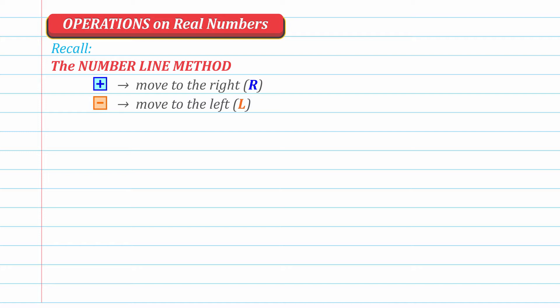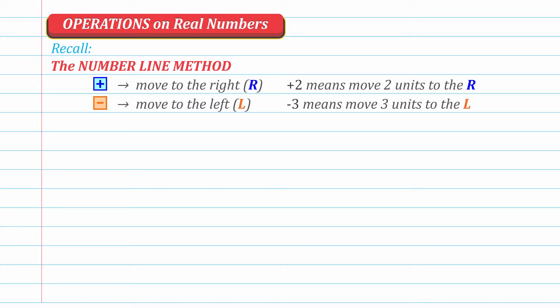For example, positive 2 means move 2 units to the right because it's positive. Negative 3 means move 3 units to the left because it's negative. Let's have an example to see this in action.